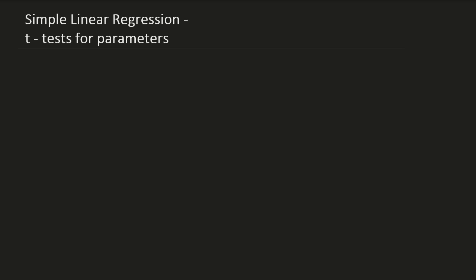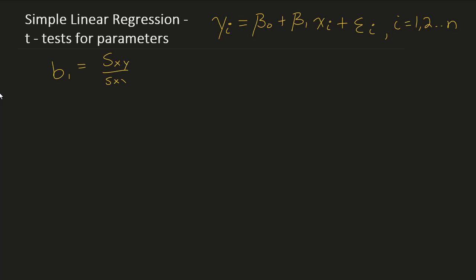In this video, we're going to talk about t-tests for parameters of the simple linear regression model. As a reminder, our model is y_i = β0 + β1·x_i + ε_i, for i = 1 to n. We've previously shown that we can estimate β1 using b1, which equals S_xy divided by S_xx — shorthand for the sum of (x_i - x̄)(y_i) divided by the sum of (x_i - x̄)².